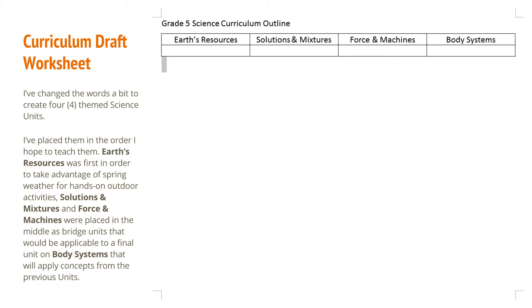I put them in the order that I hope to teach them. I chose to go with Earth's resources first so that I could take advantage of some nice spring weather to get outside and do some inquiries and examinations of rocks and plants. Solutions and mixtures and force and machines I put in the middle because I thought I could use them as bridge units leading to a final unit on body systems, applying concepts from the previous three units as a review at the end of the year. The big empty space on the right is the start of a document that I'm going to be filling in as we go.